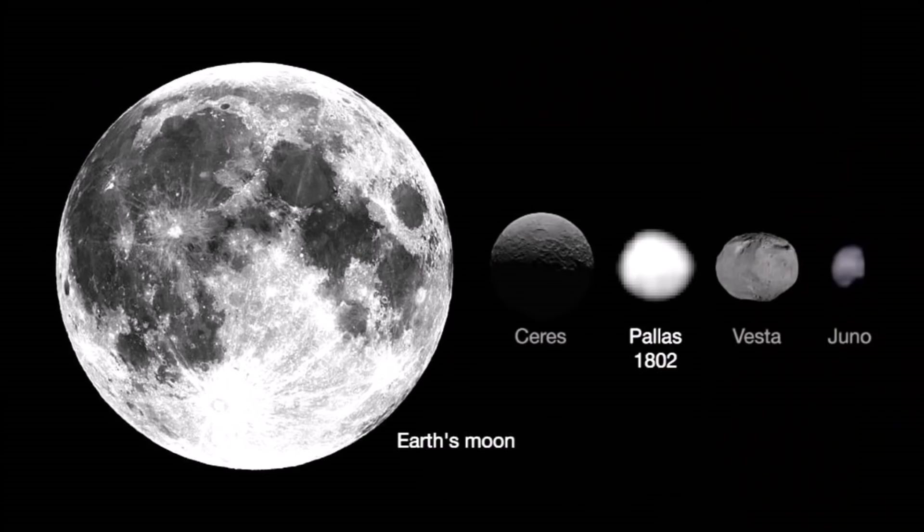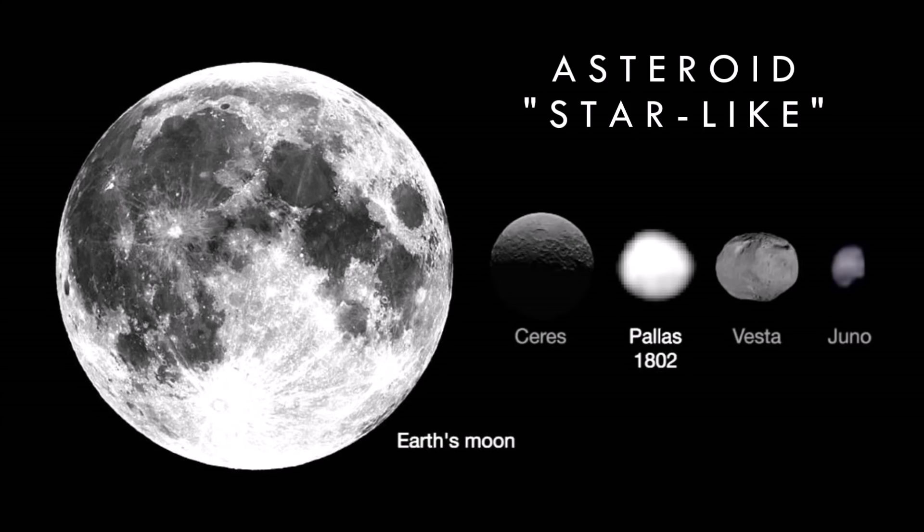Under the more recent minor planet designation system, Ceres' full name is actually 1 Ceres, followed by 2 Pallas, 3 Juno and 4 Vesta, numbered in the order of their discovery.